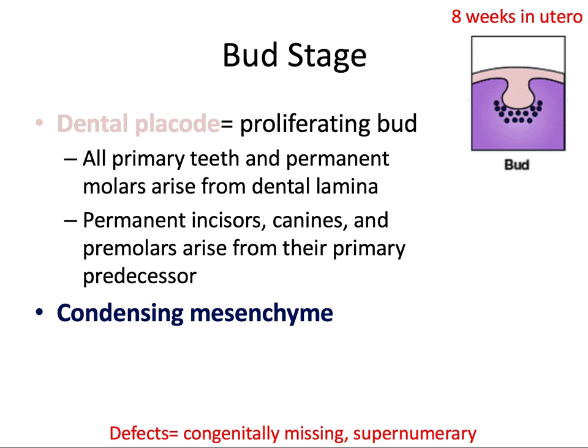The next stage is the bud stage and this begins eight weeks in utero, so two weeks later. Here the dental lamina is quickly growing and invades into the underlying mesenchyme. These proliferating areas of the dental lamina are pinching off to produce buds called dental placodes. Now this is really important.